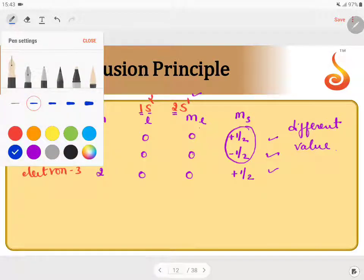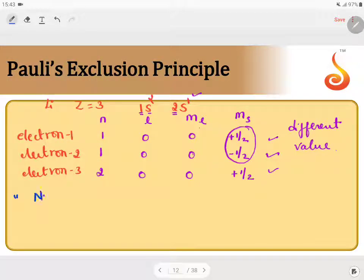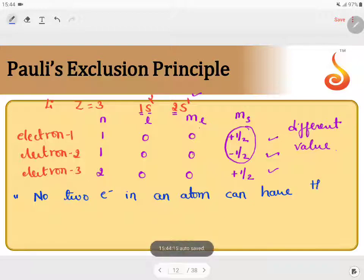What does Pauli's exclusion principle say? No two electrons in an atom can have the same set of four quantum numbers.